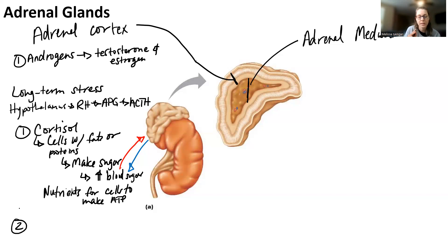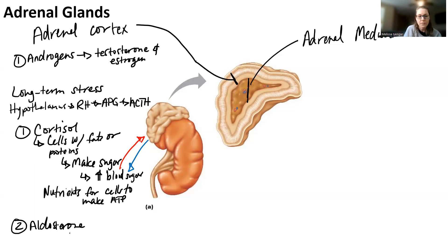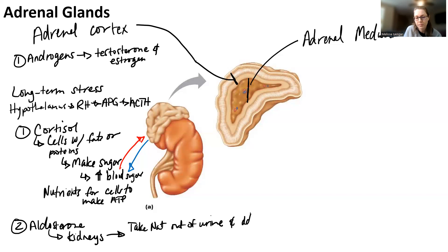The other hormone that ACTH causes to be released is aldosterone. Aldosterone has multiple stimuli — one is hormonal via ACTH. ACTH is released on a consistent basis and so aldosterone gets released on a consistent basis, with other stimuli causing aldosterone levels to increase or decrease. Essentially, aldosterone targets the kidneys, where the kidneys reabsorb sodium — taking sodium out of urine and adding it to blood.